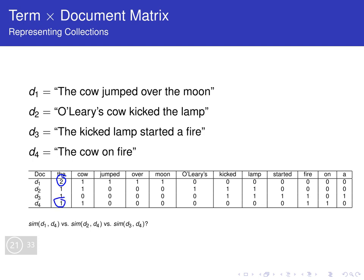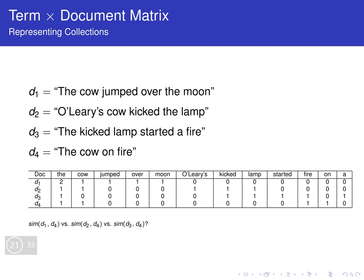The cosine similarity's numerator is the dot product, meaning the multiplication and addition of each one of the overlapping words — so it'll have, for example, the first word of document one times the first word of document two, plus x2 times y2, and so on. That's the numerator of the cosine similarity. Now here's the problem: if this frequency is super big and this frequency is super big, that multiplication is going to be very big and it might skew our similarity score in the wrong way.